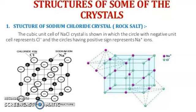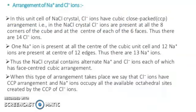Sodium chloride lattice structure — arrangement of Na⁺ and Cl⁻. In this unit cell of sodium chloride crystal, Cl⁻ ions have cubic close pack arrangement. Cl⁻ ions are present at all the eight corners of the cube and at the center of each of the six faces. Thus, there are 14 chloride ion positions and 13 sodium ion positions. The sodium chloride crystal contains alternate Na⁺ and Cl⁻ ions, each of which has a face-centered cubic arrangement.